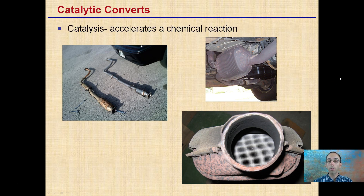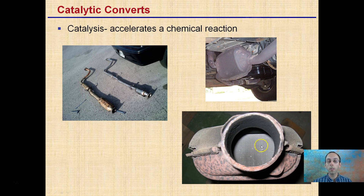Now, consider catalytic converters in cars. Internal combustion engines have catalysts which accelerate chemical reactions. There is a catalytic converter in these engines that helps speed up the reaction to reduce some of the emissions that are produced.